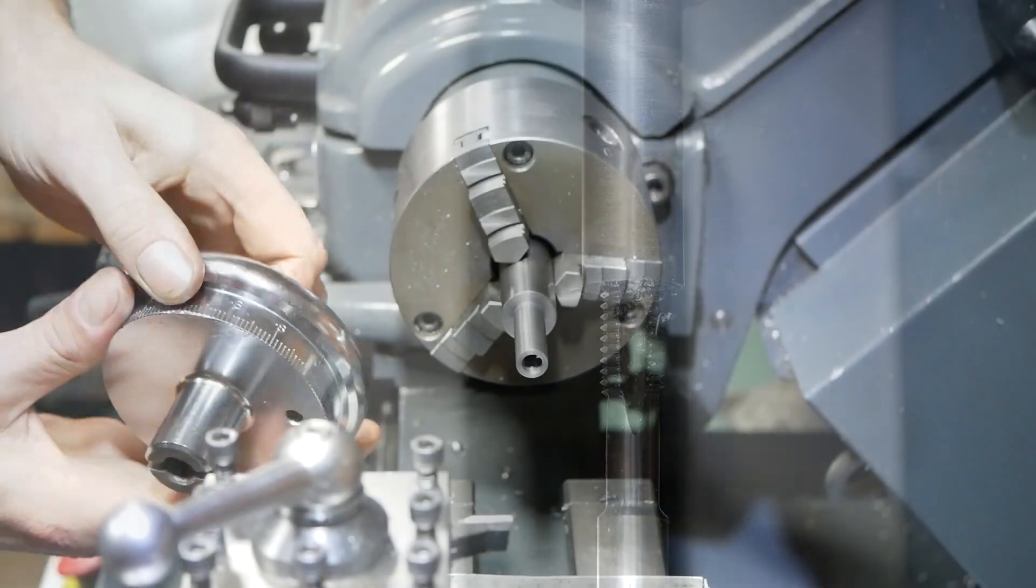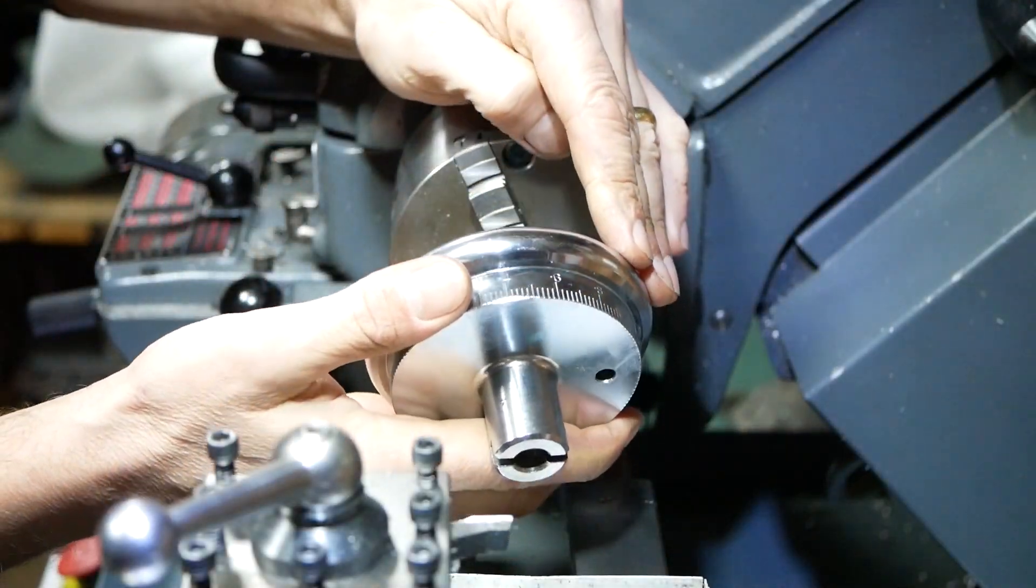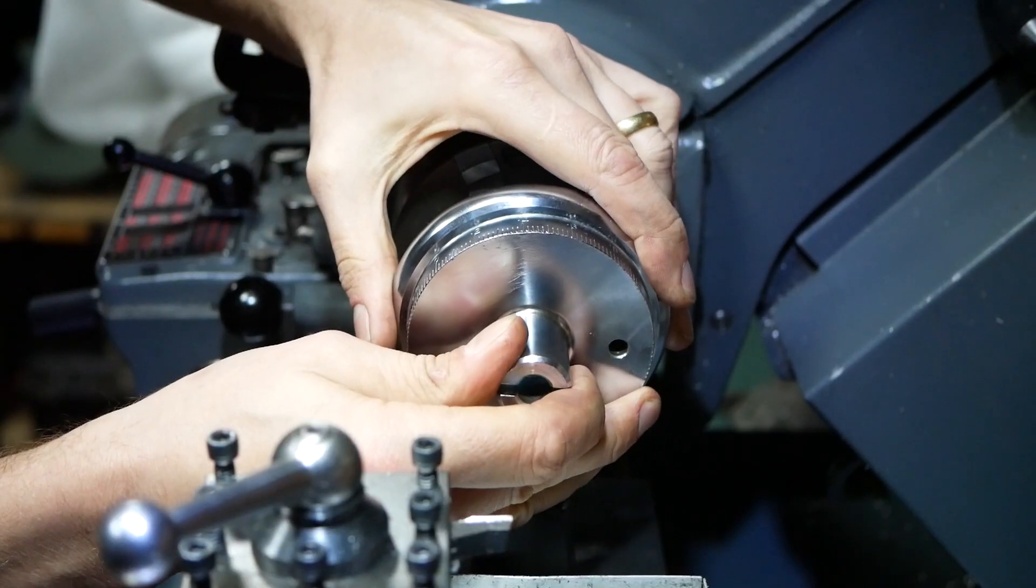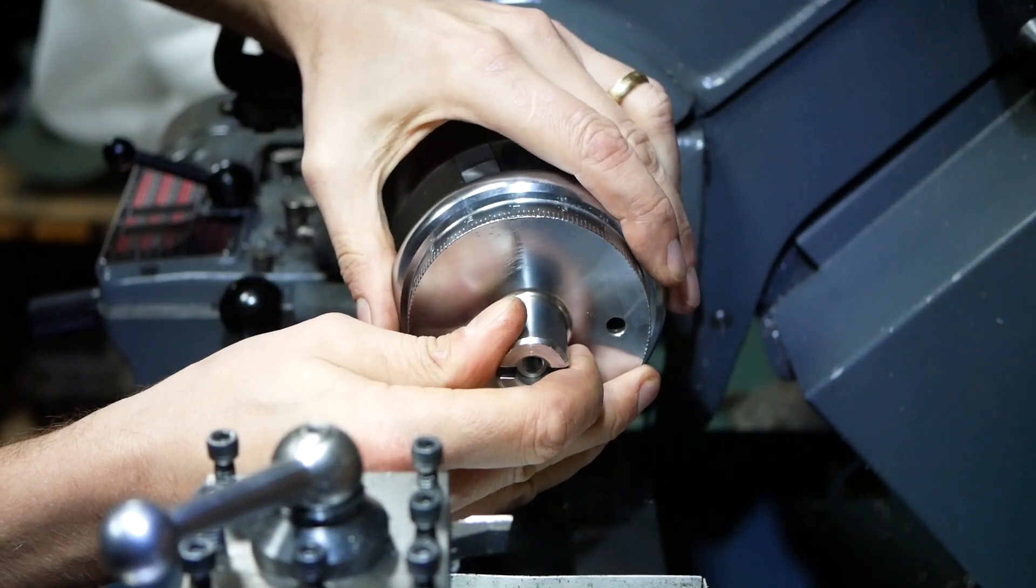The end of the arbor is drilled and tapped so the handwheel can be clamped in place. The handwheel is a push fit on the arbor which helps reduce inaccuracies in holding.